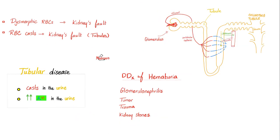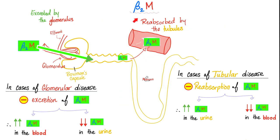How do I know that blood is coming from the kidney? Dysmorphic red blood cells and red blood cell casts. After establishing it's the kidney's fault, the next question is: which part of the kidney is involved — is it a problem with the glomeruli or with the tubules? To understand this, you can order a beta-2 microglobulin. I have a separate video about this topic in my lab's playlist.